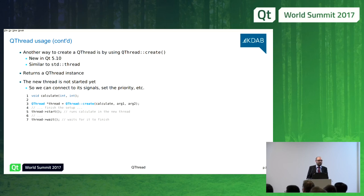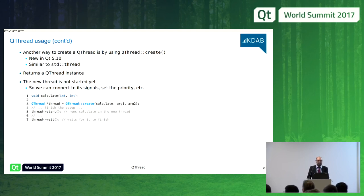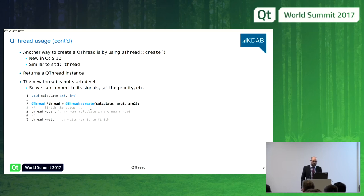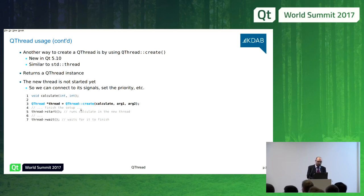If you're familiar with the standard thread API, you may notice some differences. With standard thread, you don't subclass it — you just pass it a function to run. In Qt 5.10, a function called QThread::create was added that does something similar: you pass it a function and its arguments, and it returns a QThread instance that runs that function in a separate thread. However, like standard thread, the thread returned by QThread::create is not started yet — you still need to start it manually, allowing additional setup before starting.